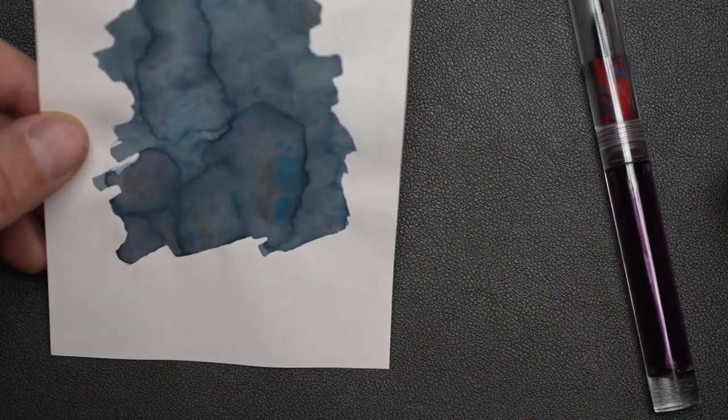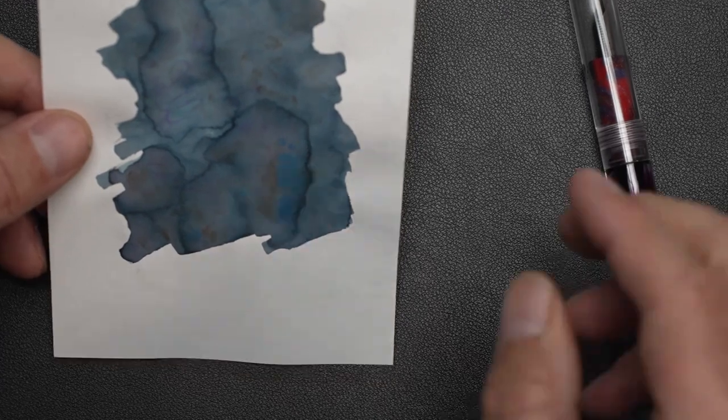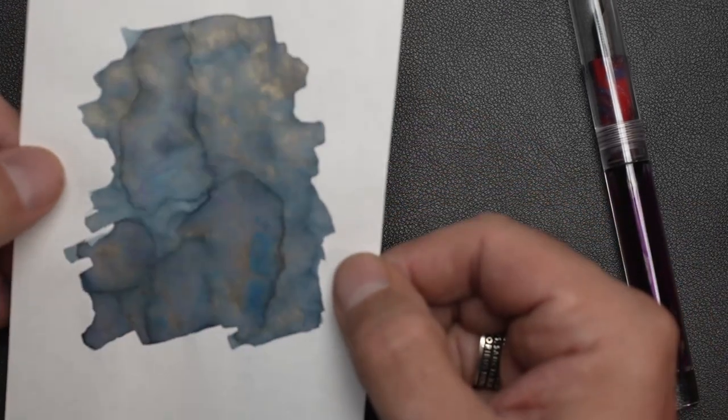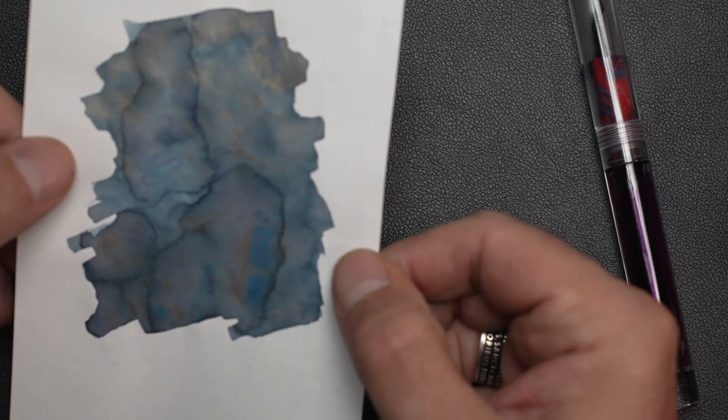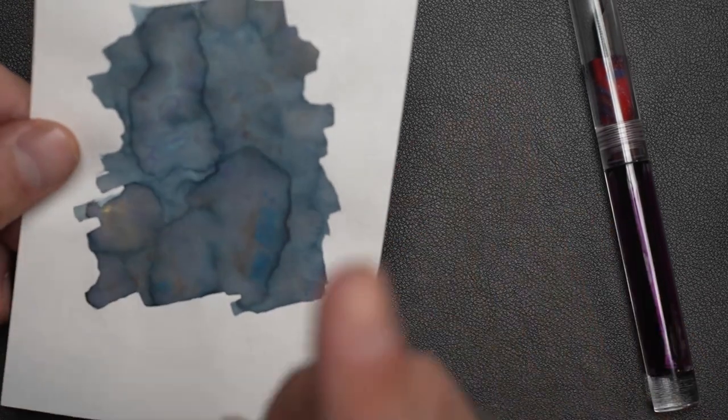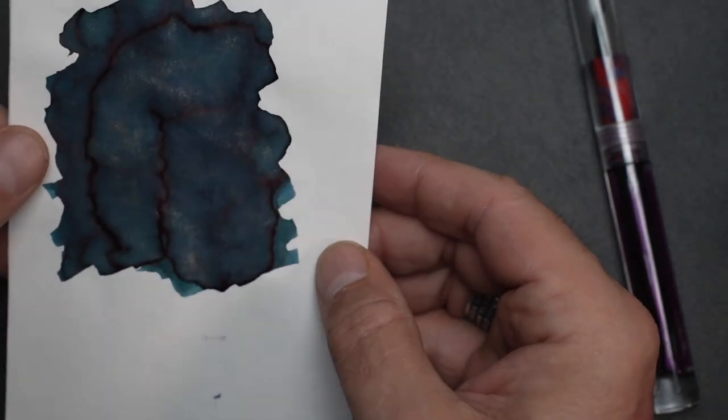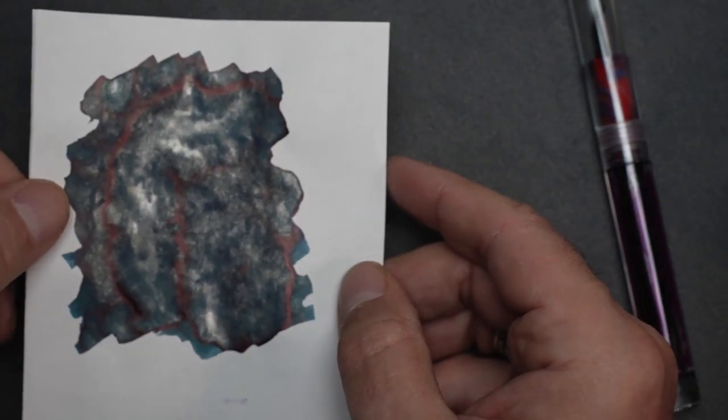Now, the box says that it should have some red sheen. Folks, I don't see the red sheen here. I really don't. And I think I know why I don't see it, because I've mixed it up with another ink. Sorry, folks. So I do have the red sheen.